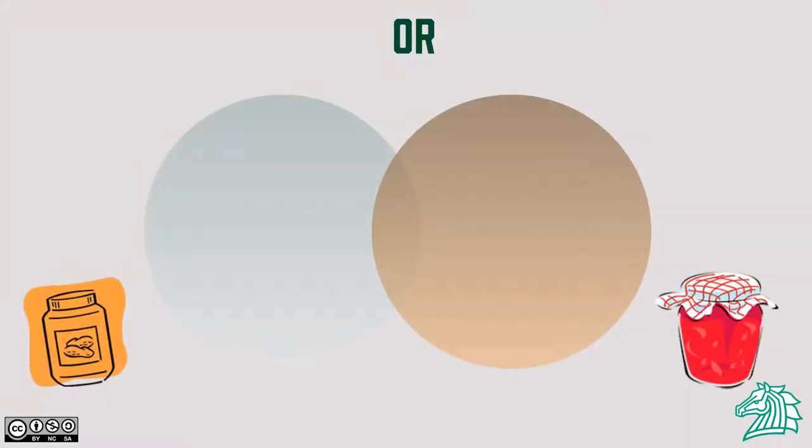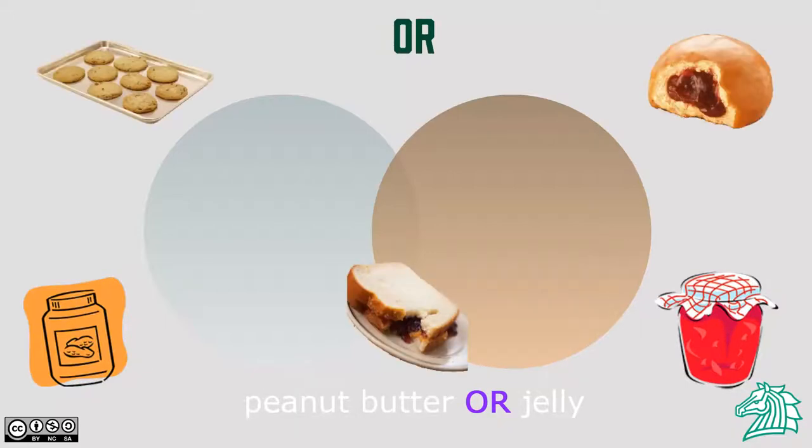Turning back to our peanut butter and jelly example, by typing OR between these two phrases, we will find all resources that use the phrase peanut butter or the phrase jelly. The results will include not only resources on peanut butter and jelly sandwiches, but also resources on peanut butter cookies or jelly donuts.